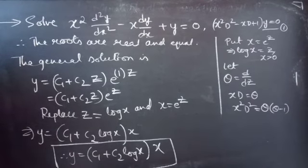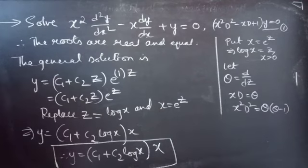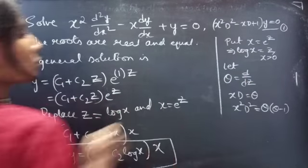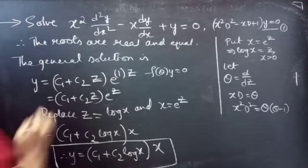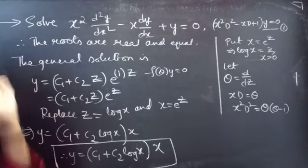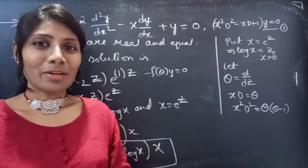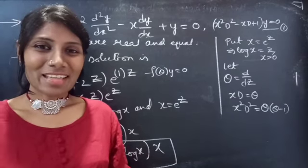This completes the problem. In order to reduce the given linear differential equation with variable coefficients — that is, Cauchy's equation — to a linear differential equation with constant coefficients, we put x equals e^z and θ equals d/dz. Then we get f(θ)·y equals 0 or f(θ)·y equals some function of z, and we solve it using known methods. We have seen a problem from linear differential equations with variable coefficients in this video. Hope you will understand. I will see you in the next video — until then, bye-bye.